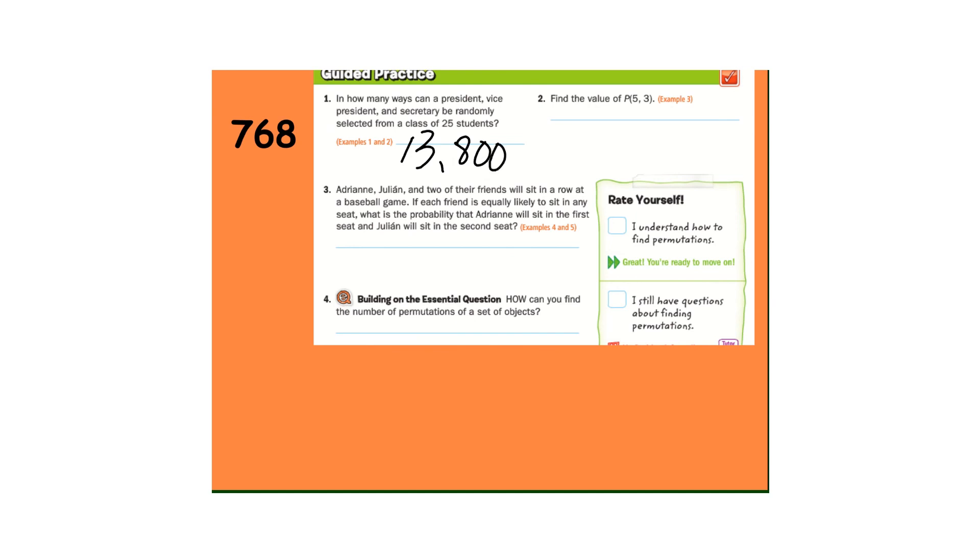Number two. Five times four times three. We need three spots, starting with the five. So we have 20 times three. Permutation five, three is 60.